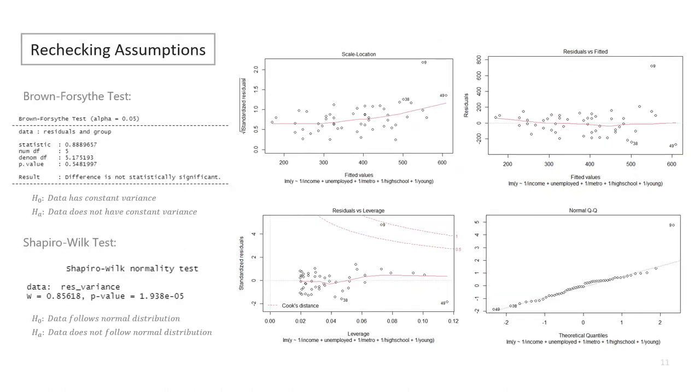We know now that the linearity assumption has been fixed, but before moving on, we need to recheck our other assumptions with the transform model. Running the Brown-Forsythe test again, we get a p-value of 0.5482, which is much higher than the significance level of 0.05, and much higher than the p-value of 0.06867 from our original model. Therefore, we can conclude that the model still satisfies the constant variance assumption.